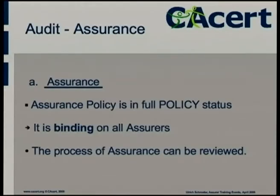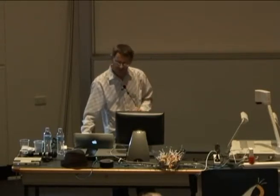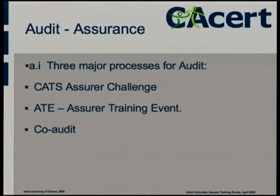How the audit affected assurance: we needed a policy. Assurance policy is now in full policy status — it has been for two years. That means it's binding on all the assurers. It's a valid document that tells you what to do and you have to follow it to the extent that it tells you. It's not a dictatorial document; it's written in a fairly guideline sense, but it is binding. Because we've got that policy, it means that assurance — the RA, the assurance business — can be reviewed by an auditor. Within this area, as far as the audit is concerned, there are three big lumps which are important, and we're going to see all three today.